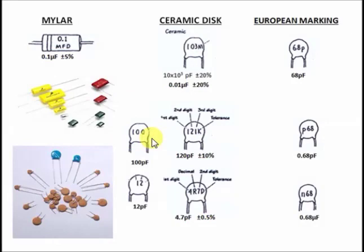For the next example where the value shown is '100': the third digit is 0, meaning you add zero zeros, so the reading is simply 100 picofarad. And if only two digits are shown on your ceramic disc specs, the reading is that number directly in picofarad — for example, if '12' is written, the reading is 12 picofarad.